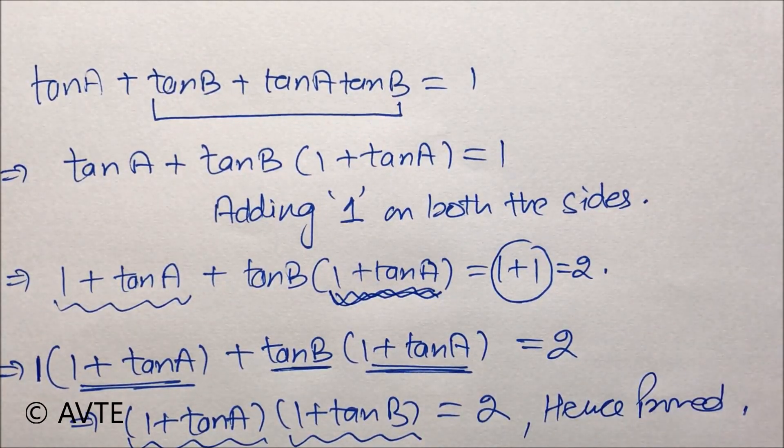The other method is you open the left-hand side, and then for B you put 45 - A and you expand. We hope that you have understood. Thank you.